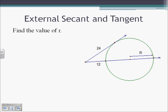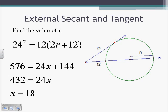Here we use the External Secant and Tangent Theorem to find the value of R, which is a radius. We have a tangent, so the tangent squared — 24 squared — is going to equal the external segment of the secant, which is 12, times the whole thing, which is 12 plus 2R, because the diameter is twice the radius R. Distributing the 12: 24R plus 144 equals 576. Subtract 144, divide by 24, and R is going to equal 18.